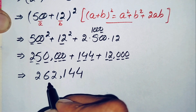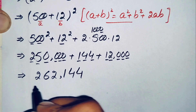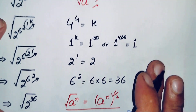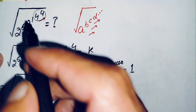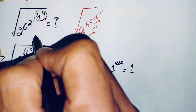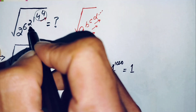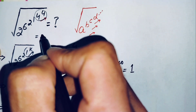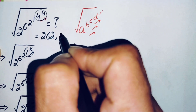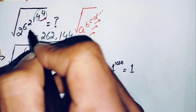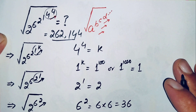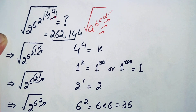Adding these numbers gives us 262,144. So the value of this square root math problem is 262,144, which matches the number we predicted at the start of the question. Please don't forget to subscribe to my YouTube channel for more interesting math videos. Thanks for watching!